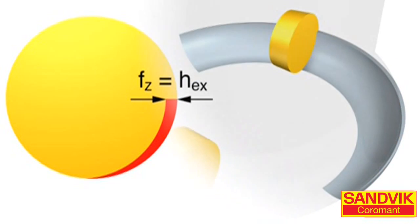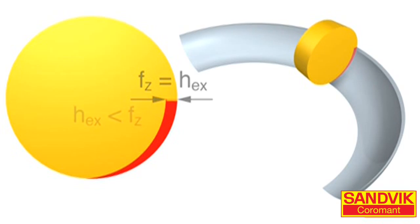Button cutters or round inserts are unique. At half the diameter of the insert, feed per tooth and chip thickness are identical, same as with a 90 degree cutter.